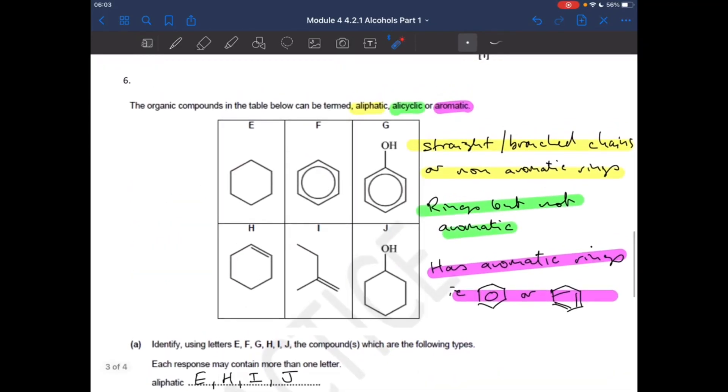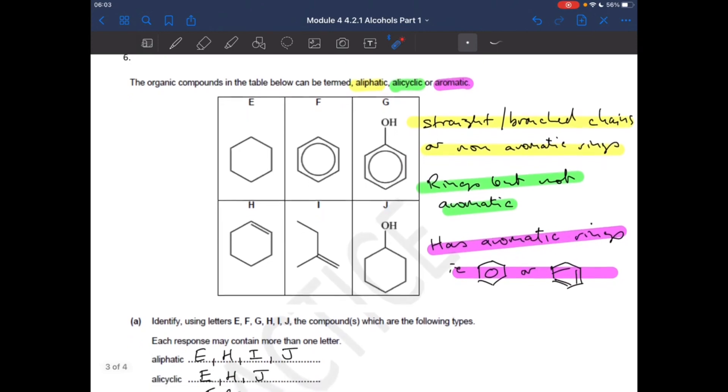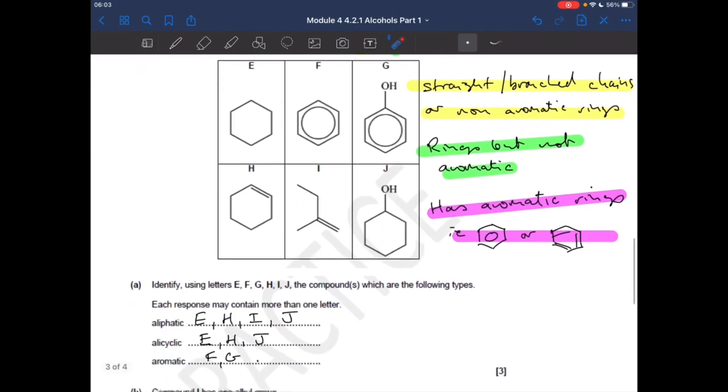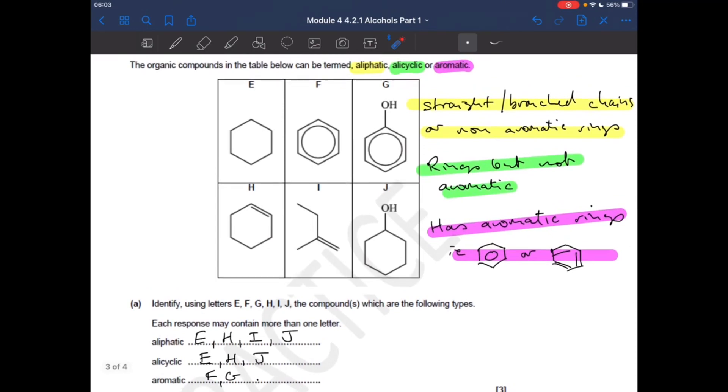Question number 6, basically testing your understanding of these three key words. So there's the definition of each one. So the aliphatic ones are the straight or branched chains or non-aromatic rings. So that's obviously aliphatic. That one, that one and that one. Alicyclic has got to be a ring but not aromatic. So we're talking about that one, that one and that one.